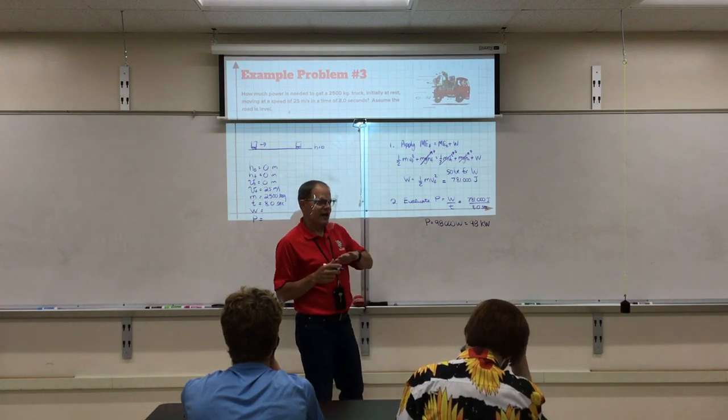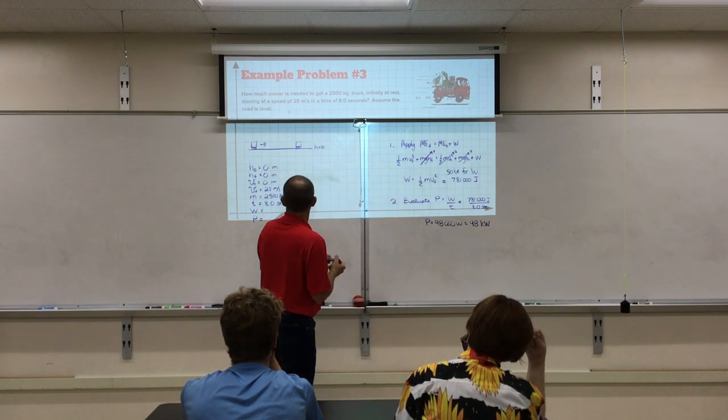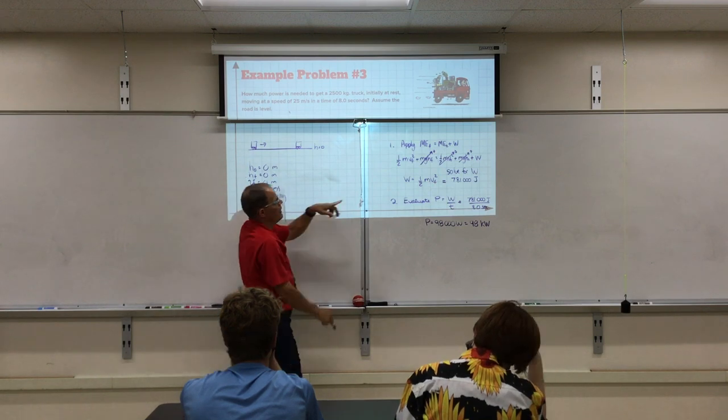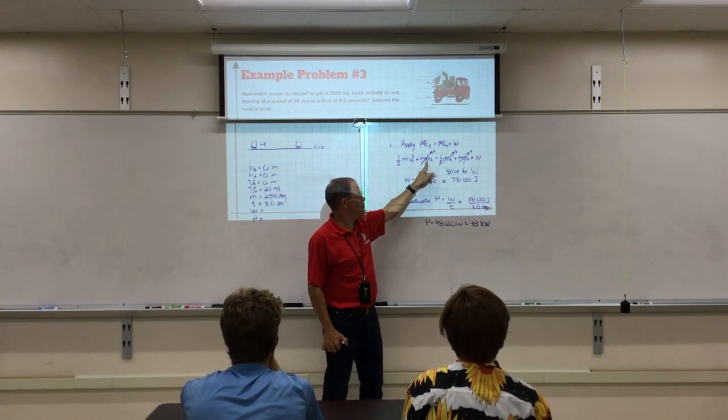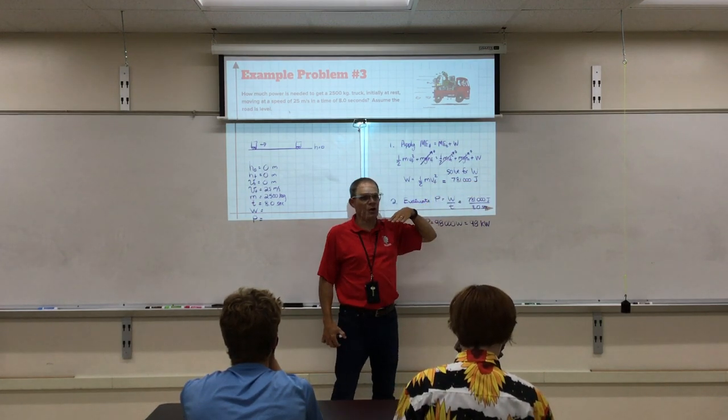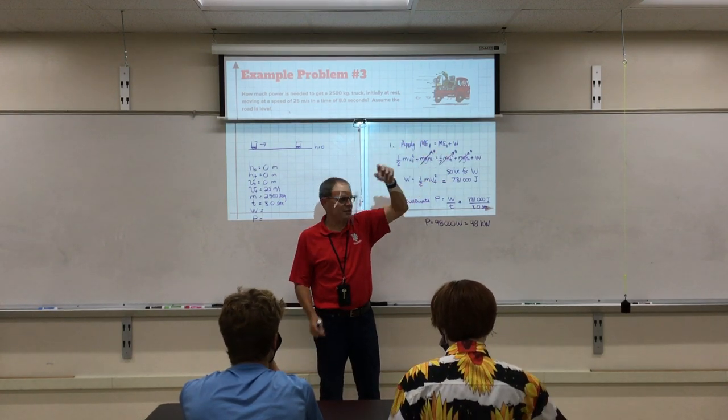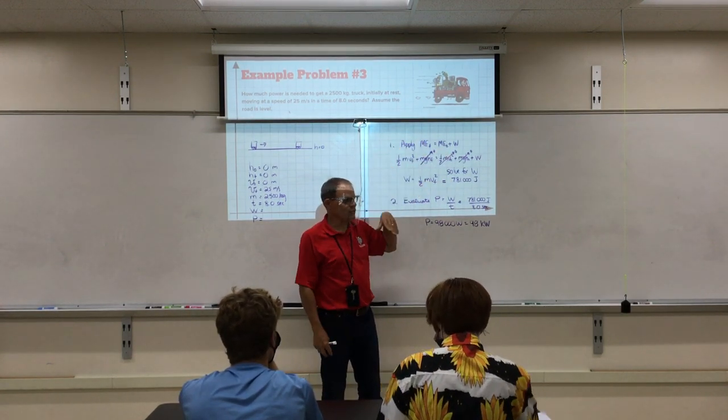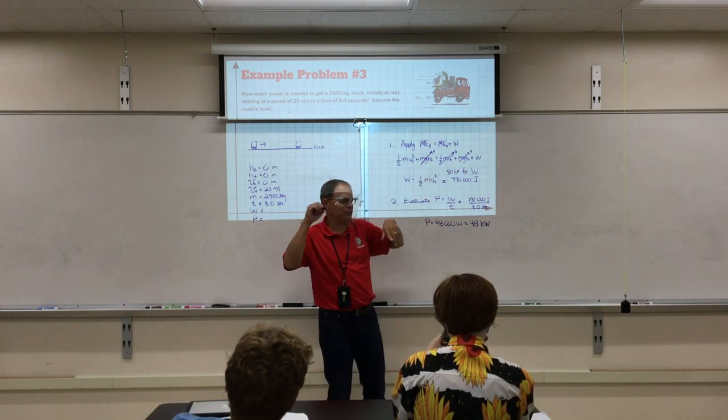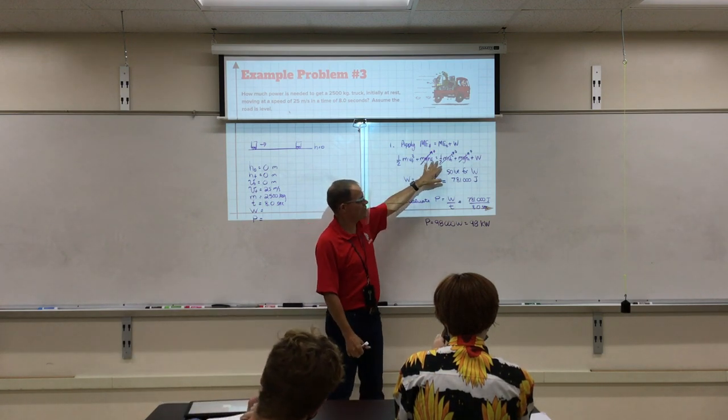Now be careful. One of the homework problems has a truck going uphill. So if it's going uphill, then the final height is not zero and you can't clobber that term. Keep it in there. You can still find the work, right? If it's a roller coaster, you need to find the power it takes to get the ride to the top of the hill with a certain velocity in a certain amount of time. You can still do it. Just be careful when you're knocking terms off here. You kind of get in a groove and just kind of knock off two or three and you knock off the wrong one and you can't get it right. So just be careful when you're thinking about that, okay?